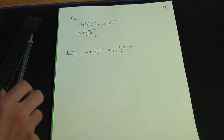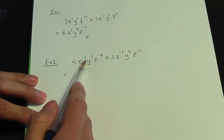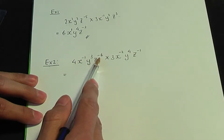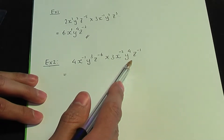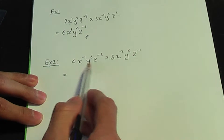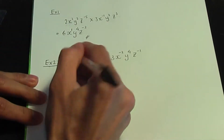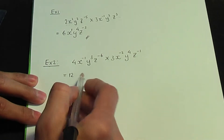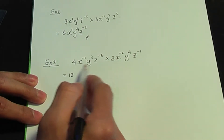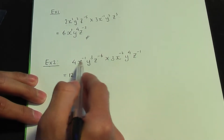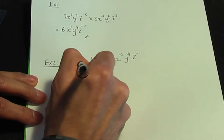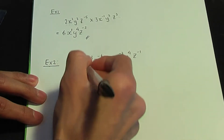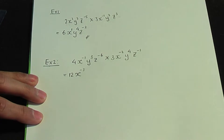Here's the next example. Example number 2: 4x to the power minus 1, y to the power 3, z to the power minus 6, multiplied by 3x to the power minus 2, y to the power 4, z to the power minus 1. Again, we're multiplying. Let's focus on the numbers first — 4 times 3 is 12. Now let's turn our focus to the x terms. I have two terms involving x with the same base. So x to the power minus 1 times x to the power minus 2, that is x to the power minus 1 plus minus 2, which is x to the power minus 3. Remember, add the powers.